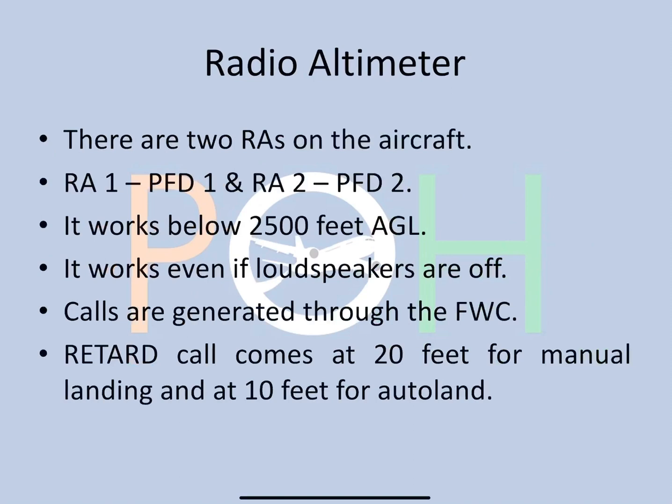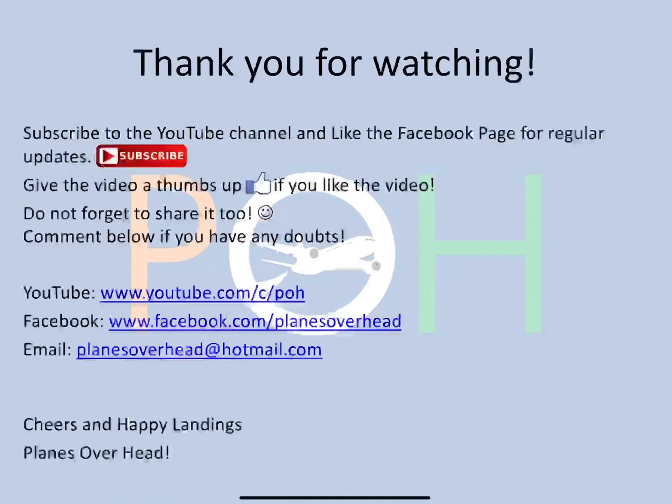Regarding the radio altimeter: there are two RAs on the aircraft. RA1 displays on PFT1 — the captain's side — and RA2 displays on PFT2, the first officer's side. It works below 2500 feet AGL, and it works even if the loudspeakers are off. Calls are generated through the FWC — Flight Warning Computer. There is a retard call that comes at 20 feet for a manual landing; for an autoland, the retard call comes at 10 feet.